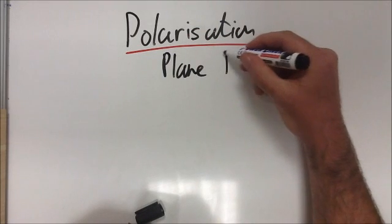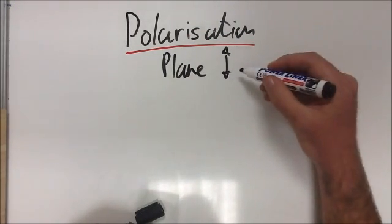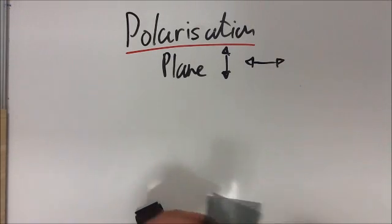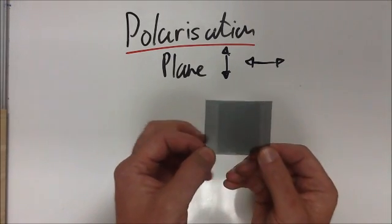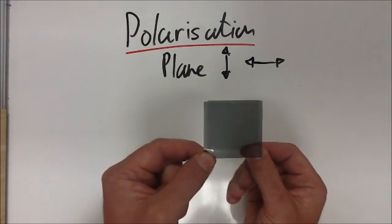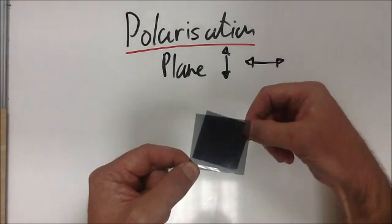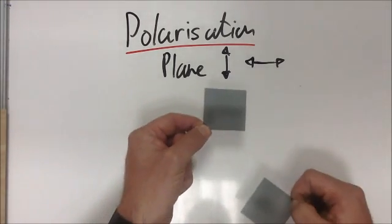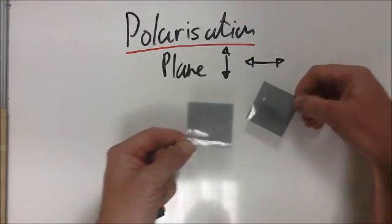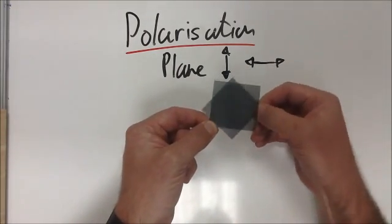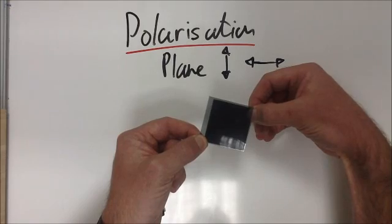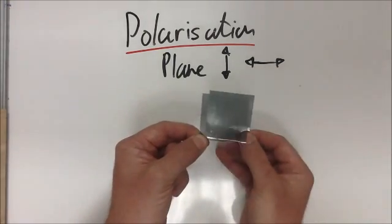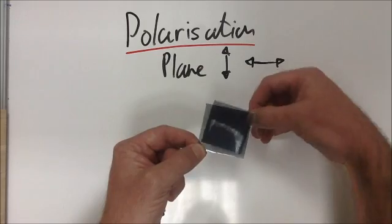Light can either oscillate in a vertical plane or in a horizontal plane. Here, the planes of these Polaroid filters are aligned. But when I turn it, it gets darker because I'm removing both the horizontal and the vertical light. The test for polarization is to rotate 90 degrees either the film or the source.